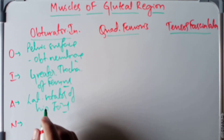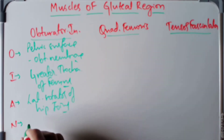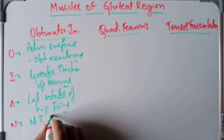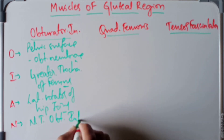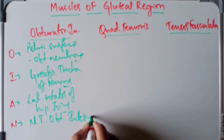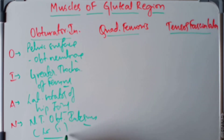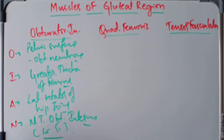The nerve supply of the obturator internus is by the nerve to obturator internus, which arises from the L5 and S1 spinal segments of the sacral plexus.